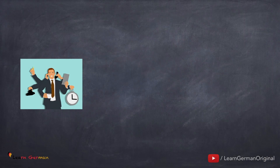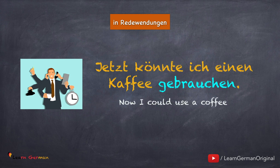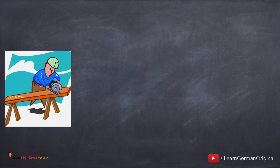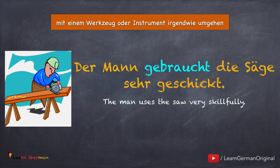Man benutzt gebrauchen auch in ein paar Redewendungen. In dieser Situation, zum Beispiel, hat man sehr viel gearbeitet und dann sagt man, jetzt könnte ich einen Kaffee gebrauchen. Gebrauchen wird auch benutzt, wenn man mit einem Werkzeug oder Instrument irgendwie umgeht. Zum Beispiel, der Mann gebraucht die Säge sehr geschickt.